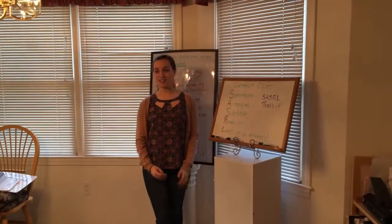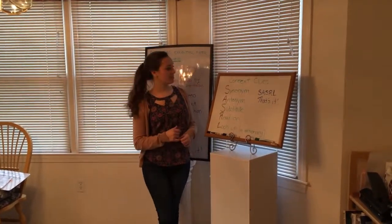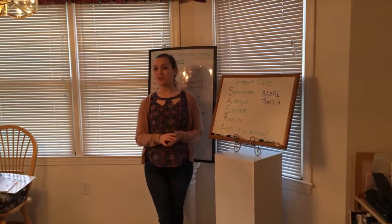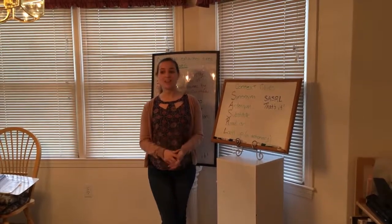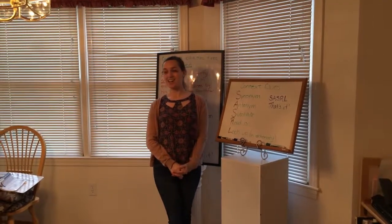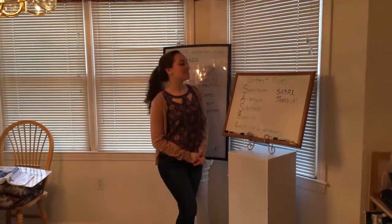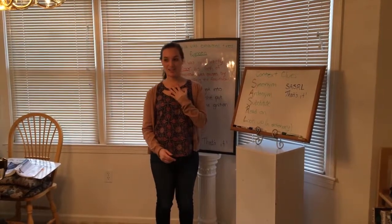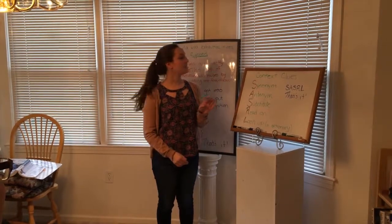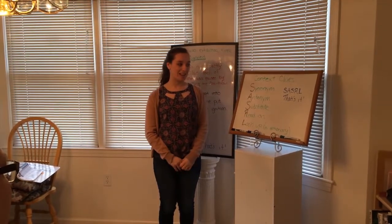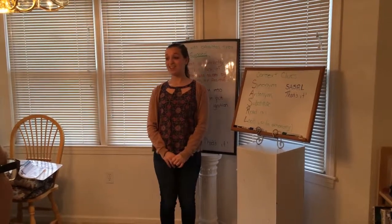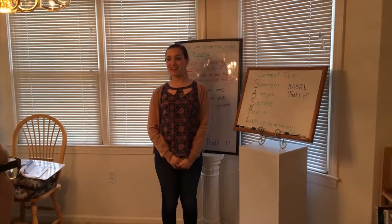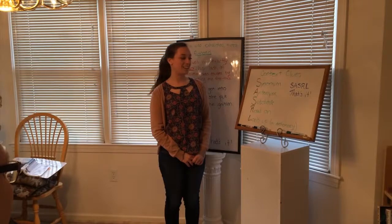So, I've come up with a song to help you guys remember the steps of using context clues. You know the song that goes, B is bananas, B-A-N-A-N-A-S. Yeah? Okay. So we're using that kind of tune. So I'm going to say it first, and then you guys say it after. So, C is for context clues, S-A-S-R-L, that's it. Alright. C is for context clues, S-A-S-R-L, that's it. Awesome.